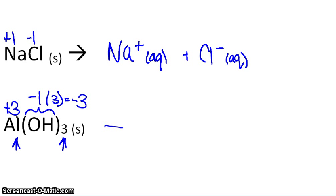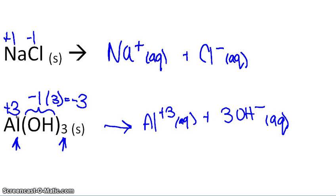So when we go to write our reaction, we have aluminum with a plus 3 charge in its aqueous form, and then we have 3 hydroxide atoms, or molecules. Again, dissolved in water. So that's how you do a net ionic dissociation reaction. Good luck and thanks for watching.